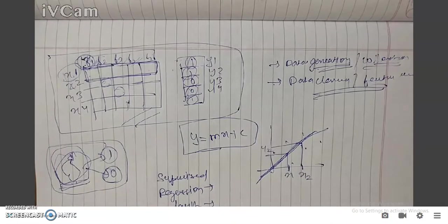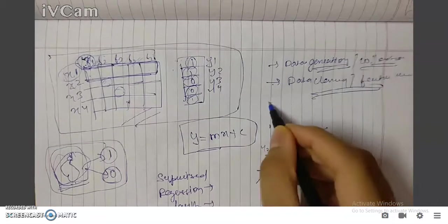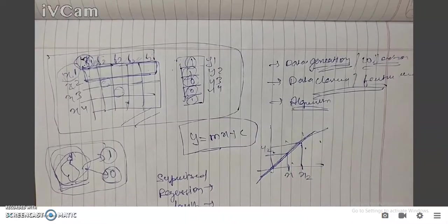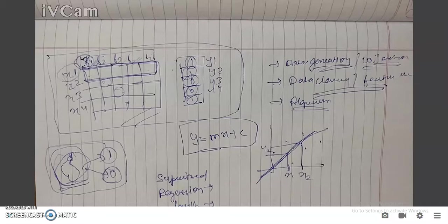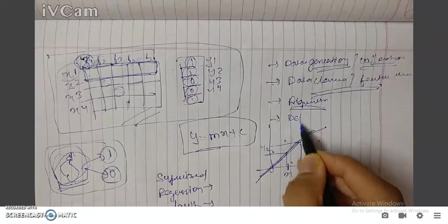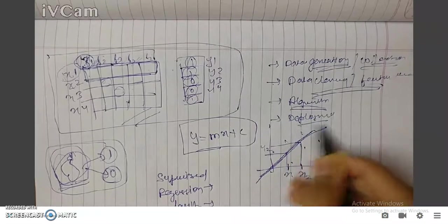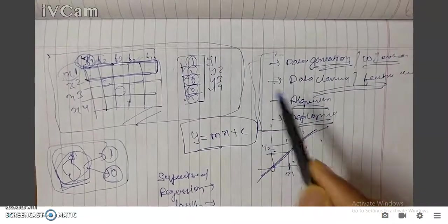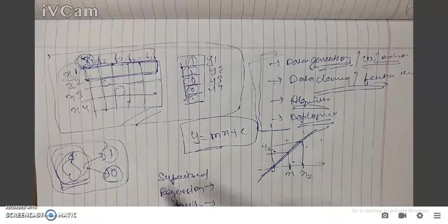The third step: we define an algorithm. That algorithm can be any machine learning model - linear regression, logistic regression, decision tree, and anything like that. And the fourth step, we go for deployment. So these are the four pipelining steps for machine learning.